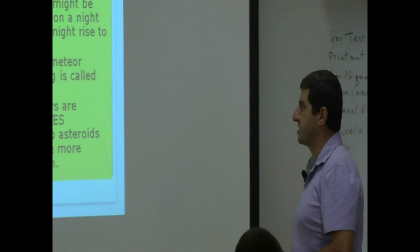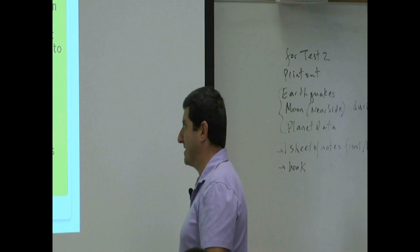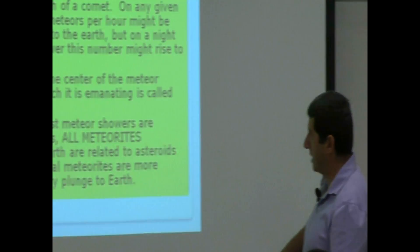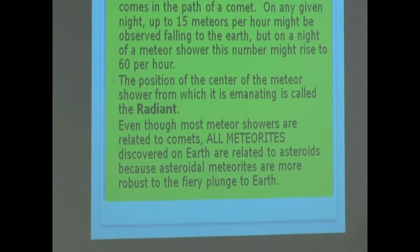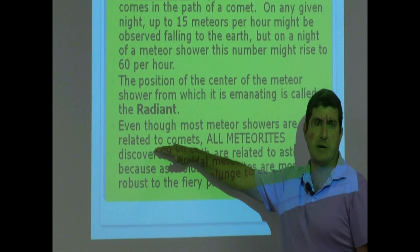Even though most meteor showers are related to comets, all meteorites discovered on Earth are related to asteroids. This is kind of a tricky point. When a meteor shower is happening, they're related to a comet.